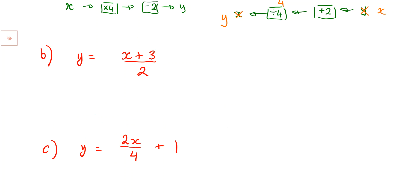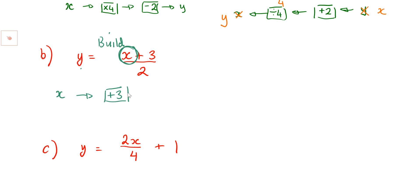If you are finding it even remotely a struggle, lay it out as a function machine first. Remember, y is at the end, x is where we start — that's the build. I need to figure out how it was built. I start with x, and the first thing I did was add 3. How do I know it was add 3 and not divide by 2? Because the division line goes under everything — so I must have added 3 first.